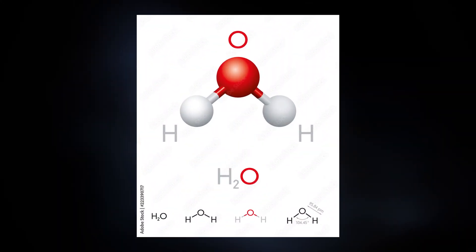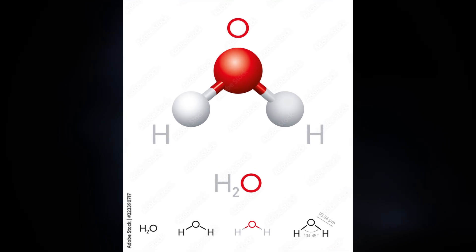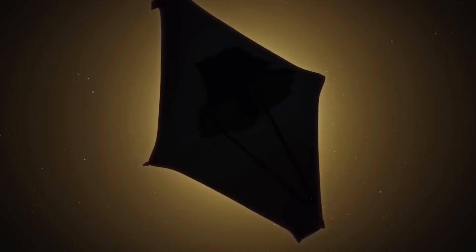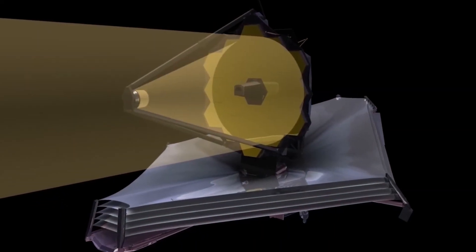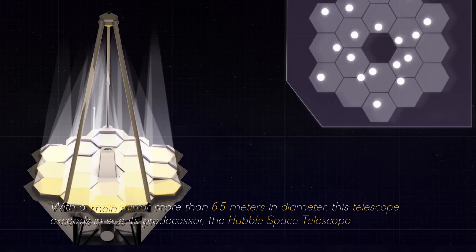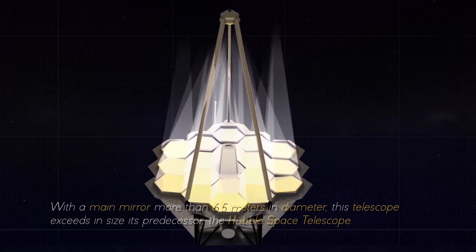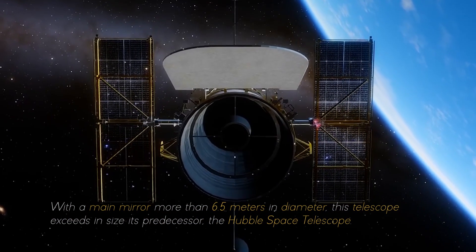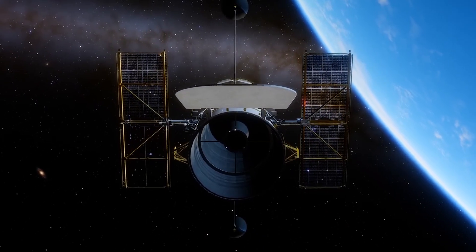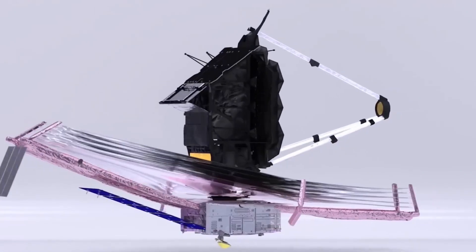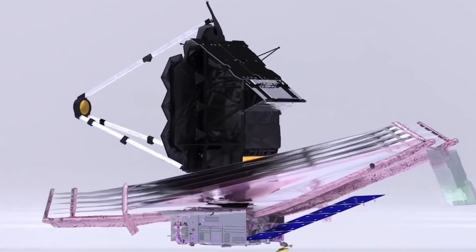What we are seeing here is the chemical signature of water vapor. The James Webb Space Telescope is equipped with an array of advanced scientific instruments carefully designed to observe the universe at an unprecedented range of wavelengths. With a main mirror more than 6.5 meters in diameter, this telescope exceeds its predecessor, the Hubble Space Telescope.